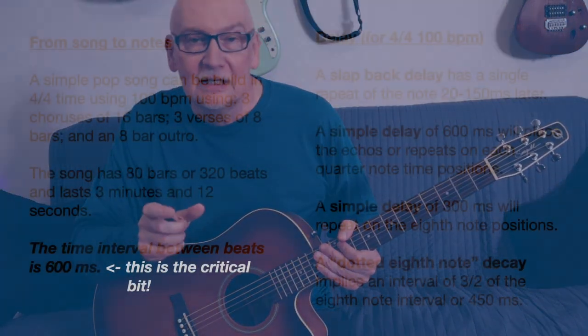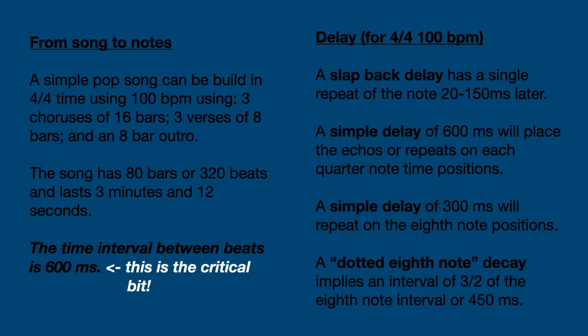I've got a good feel for what numbers to use for my 100 BPM song. But what about the dotted eighth note delay — the one that U2 likes and people try to copy everywhere? That refers to a time interval: an eighth note plus half an eighth note, which comes out to 450 milliseconds at 100 BPM.